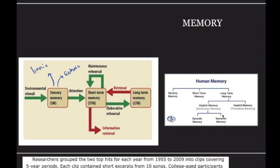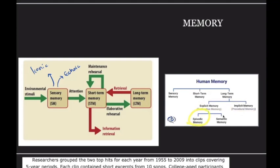Long-term memory has more distinctions and branches. You can have explicit versus implicit memory. Explicit memory, also known as declarative memory, branches into episodic and semantic memory. Know all those different distinctions and how to draw the line back up. A good example of elaborative rehearsal is having a card that says 'draw the memory tree' and being able to draw it.